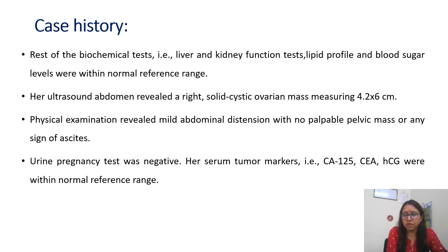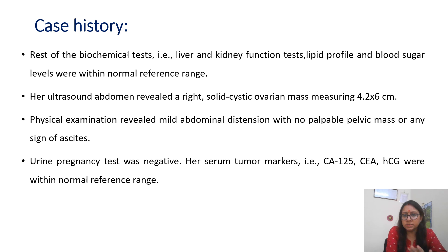An ultrasound was done in view of pain abdomen. It revealed a right-sided solid cystic ovarian mass measuring 4.2 × 6 cm. There was mild abdominal distension with no pelvic mass or any sign of ascites on physical examination. The ultrasound confirmed a right solid cystic mass measuring 4 × 6 cm. Urine pregnancy test was negative.